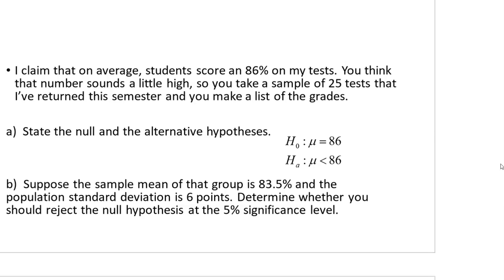Somehow you figured out that the population standard deviation throughout the semester is six points. The question is: should you reject the null hypothesis at the 5% significance level? That means I only want a 5% probability of choosing the wrong one — a 95% probability of making the correct choice.